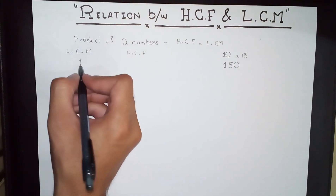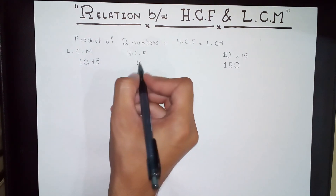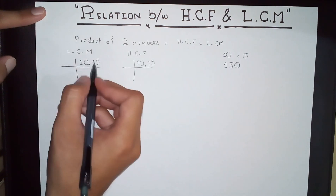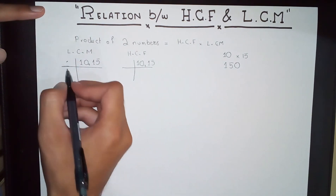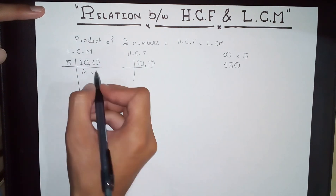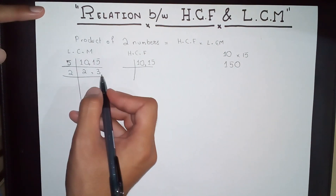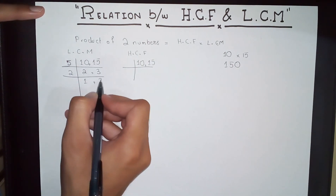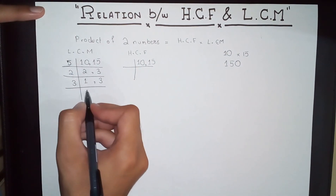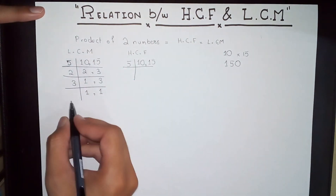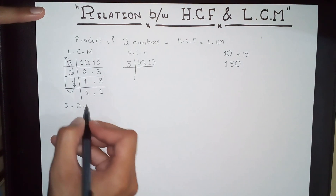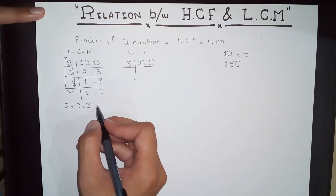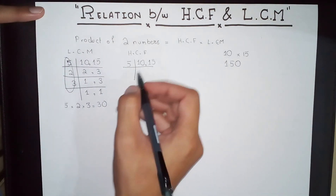Now let's find the LCM of 10 and 15. We start with 5: 5 times 2 is 10, and 5 times 3 is 15. Because this is the LCM, we reduce as much as possible: 2 times 1 is 2, leave 3 as it is, then 1, and 3 times 1 is 3. So the LCM is 5 times 2 times 3, which equals 30.